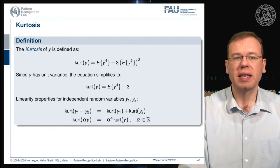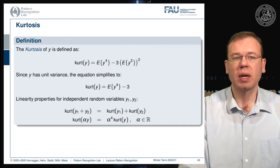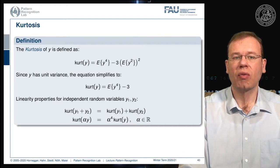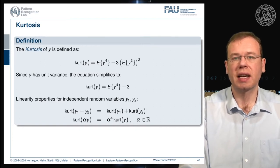If you have two independent random variables y1 and y2, linearity properties hold: the kurtosis of y1 plus y2 equals the kurtosis of y1 plus the kurtosis of y2. Also, scaling by a scalar alpha results in the kurtosis of y multiplied by alpha to the power of four.